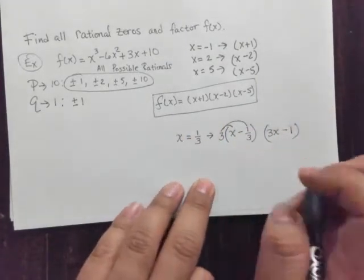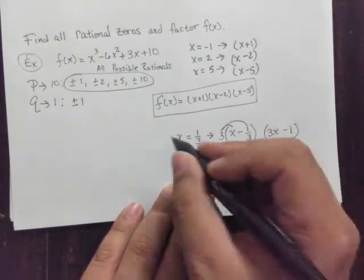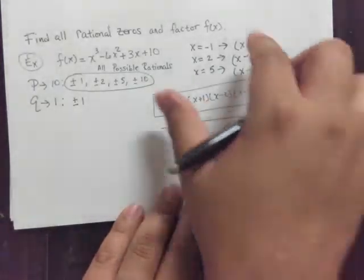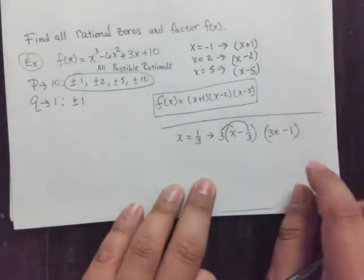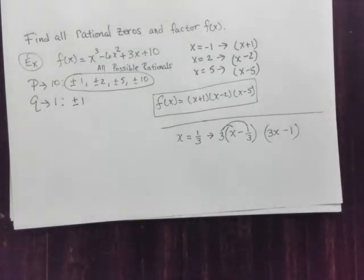So if you had x equals 1 third, this is actually the factor that it came from. So this is just a little bit of bonus information, nothing to do with this problem. But you may run into something that looks like this, and I just wanted to be thorough enough and explain that for you. So good luck.